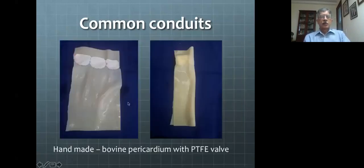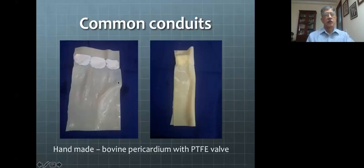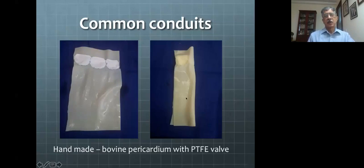Here are examples of handmade conduits, which can be made in the operating room. For economic reasons or when a commercial conduit is not readily available, you take a sheet of bovine pericardium and suture either two or three cusps inside — bicuspid or tricuspid valve. There are various measurements available for sizing these cusps. Once you fold this it becomes a conduit — a valve inside with the tube outside.